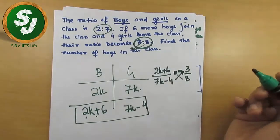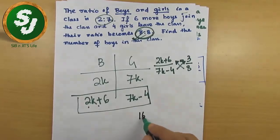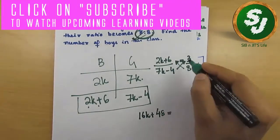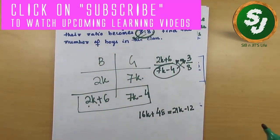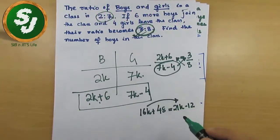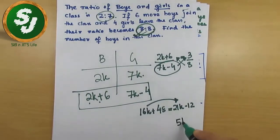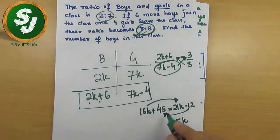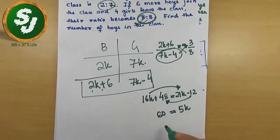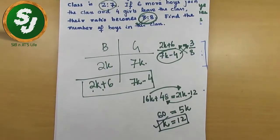Cross multiplying: 8 × (2k + 6) = 3 × (7k − 4), which gives 16k + 48 = 21k − 12. Keeping k on one side: 21k − 16k = 5k, and shifting the numbers: 48 + 12 = 60. So 5k = 60, which gives k = 12. Once you find k, the question is almost done.